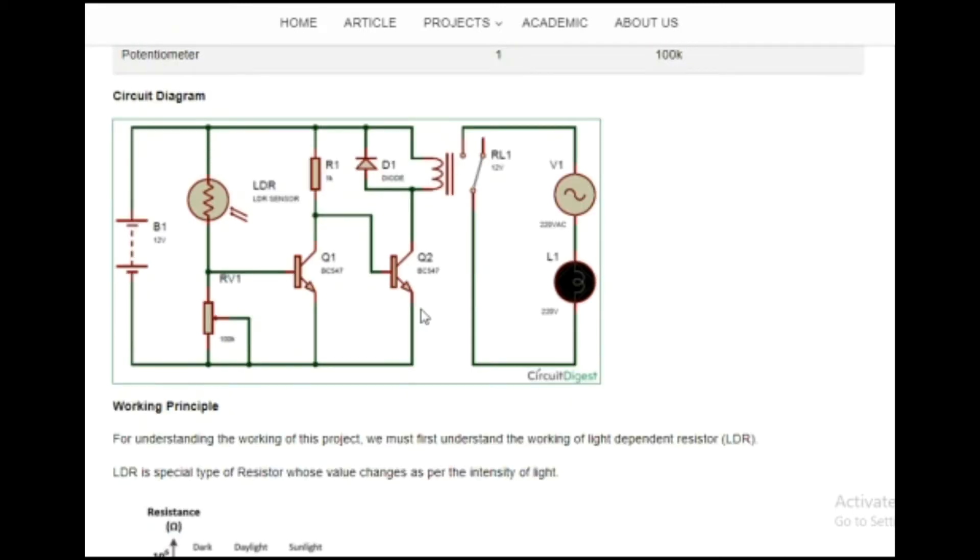In condition 1, during the daytime, there will be high intensity of light falling on the LDR so that its resistance will be very low. Due to the low resistance in the LDR section, there will be voltage appearing across the base junction of the first transistor, which will forward bias the base-emitter junction. Once the base-emitter junction is forward biased, either this transistor will be in saturation region or in active region.